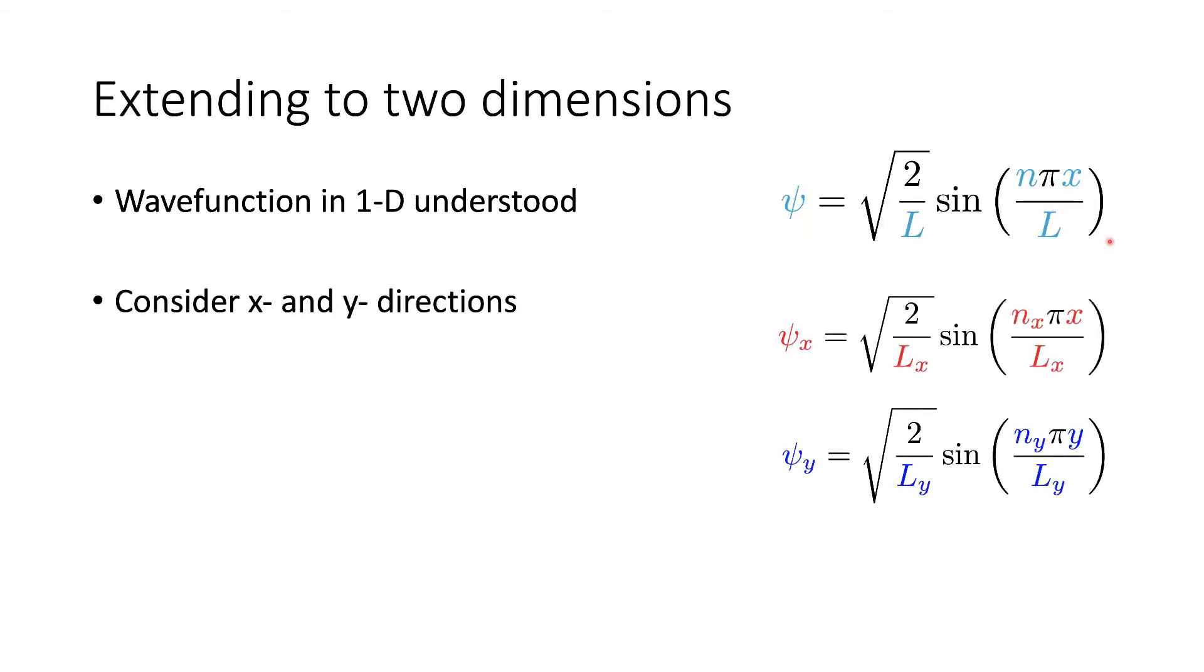So when we extend to two dimensions, we have to think about what went on in the one-dimensional box. We reasonably well understand how we got to this wave function for the particle in the one-dimensional box. The two-dimensional box is much the same except we now consider x and y dimensions. So we have a wave function for the x dimension and a wave function for the y dimension.